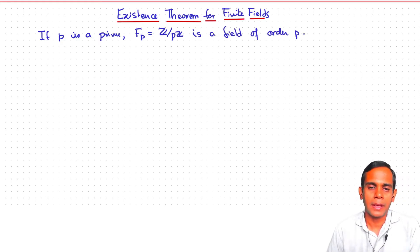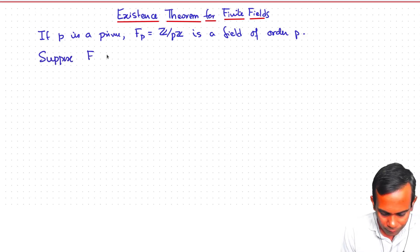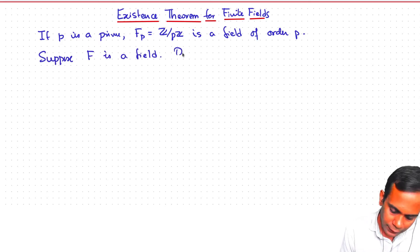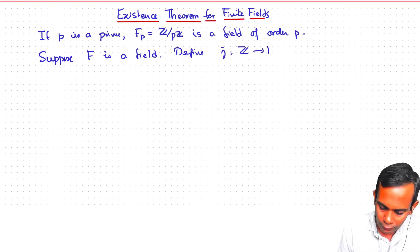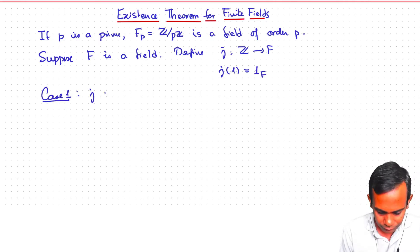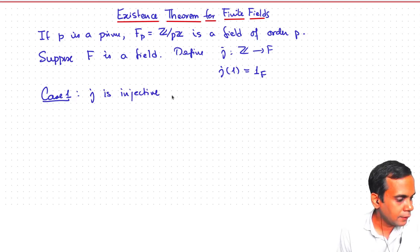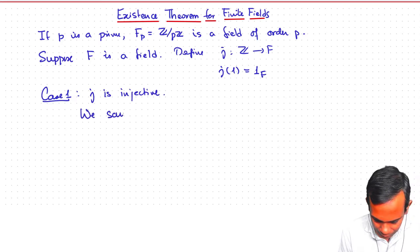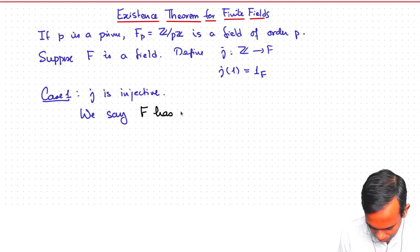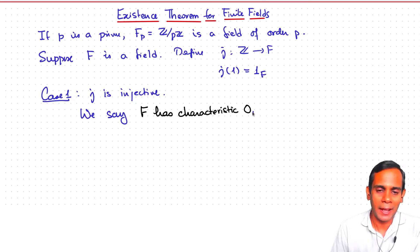What other orders can finite fields have? To understand this, suppose F is a field. Then you define a ring homomorphism j from Z to F by setting j(1) equal to the unit of F. The first case is that j is injective. In this case, we say that F has characteristic 0.